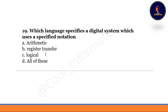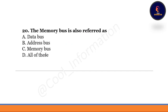Question 19: Which language specifies a digital system using a specified notation? Option A: arithmetic, option B: register transfer, option C: logical, option D: all of these. The correct option is B, which is register transfer.